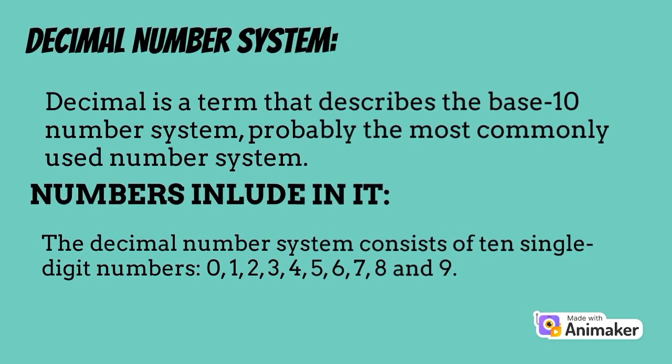Decimal is a term that describes the base 10 number system, probably the most commonly used number system. The decimal number system consists of 10 single-digit numbers: 0, 1, 2, 3, 4, 5, 6, 7, 8, and 9.